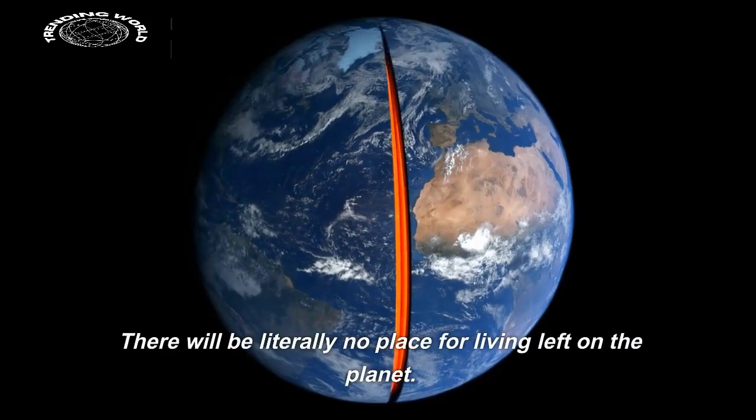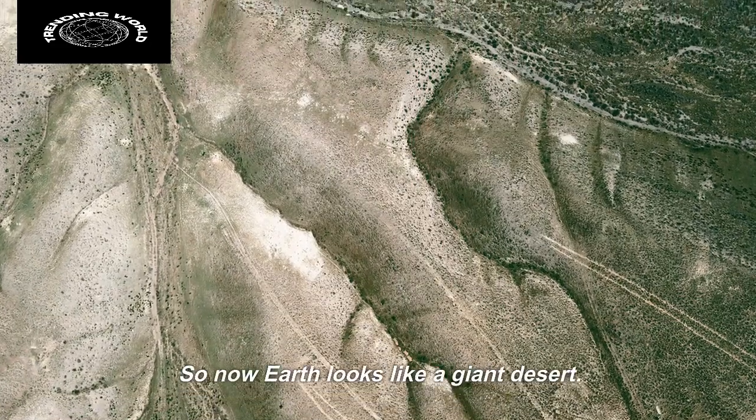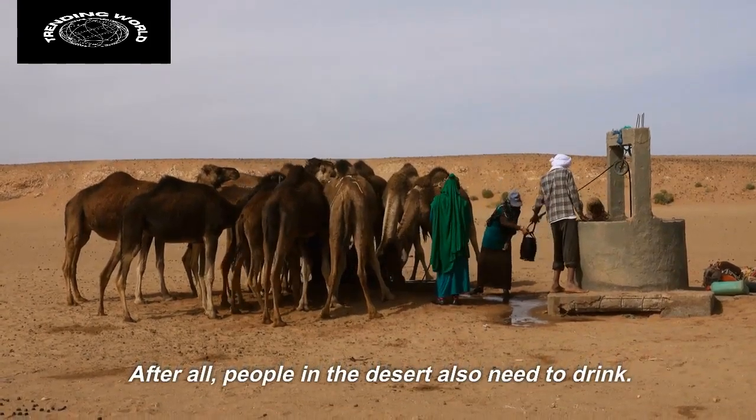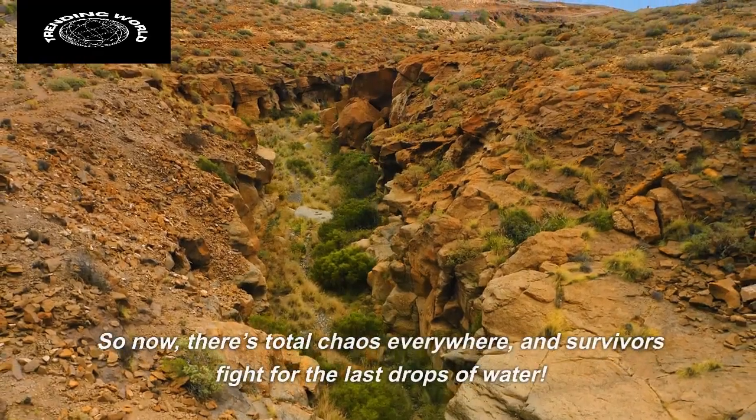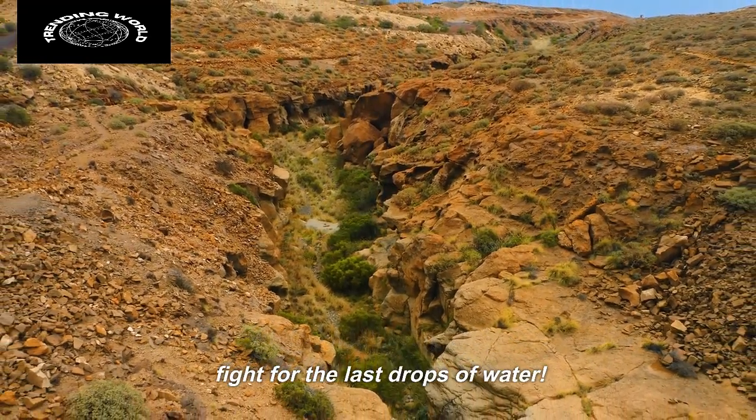There will be literally no place for living left on the planet. So now, Earth looks like a giant desert. After all, people in the desert also need to drink. So now, there's total chaos everywhere, and survivors fight for the last drops of water.